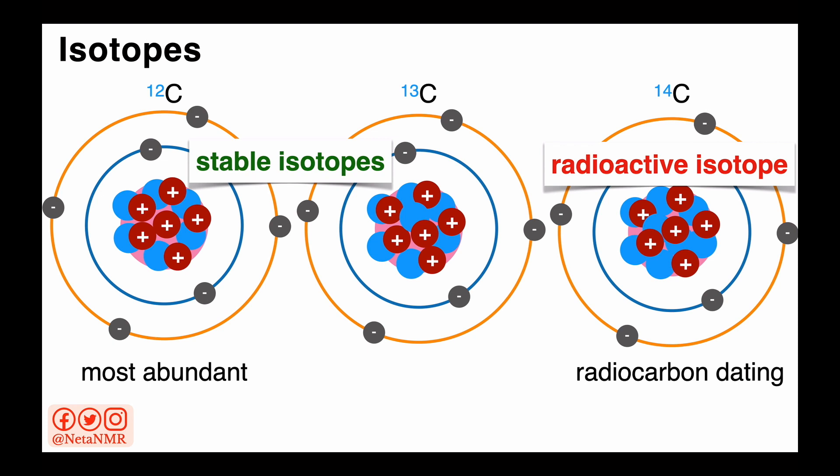Carbon 14 is a very useful isotope which can be used in a scientific technique called radiocarbon dating. This method is used to determine how old an object is, and it is very useful in detecting the age of objects that are made of organic matter, which is very rich in carbon.